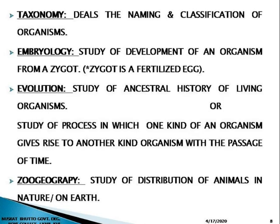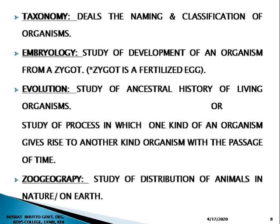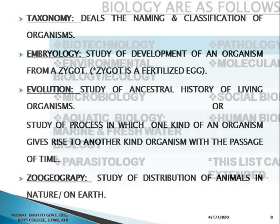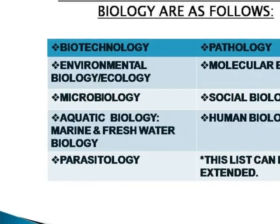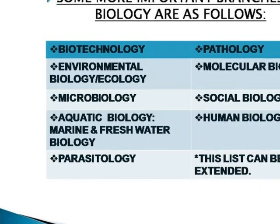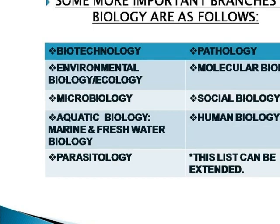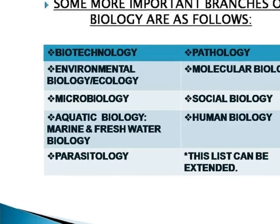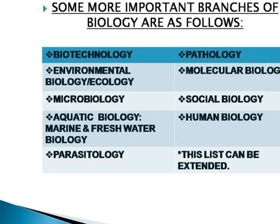Zoogeography: the study of distribution of animals in nature or on Earth. There are some other important branches of biology as well, including biotechnology, environmental biology or ecology, microbiology, and aquatic biology, which includes marine and freshwater biology.